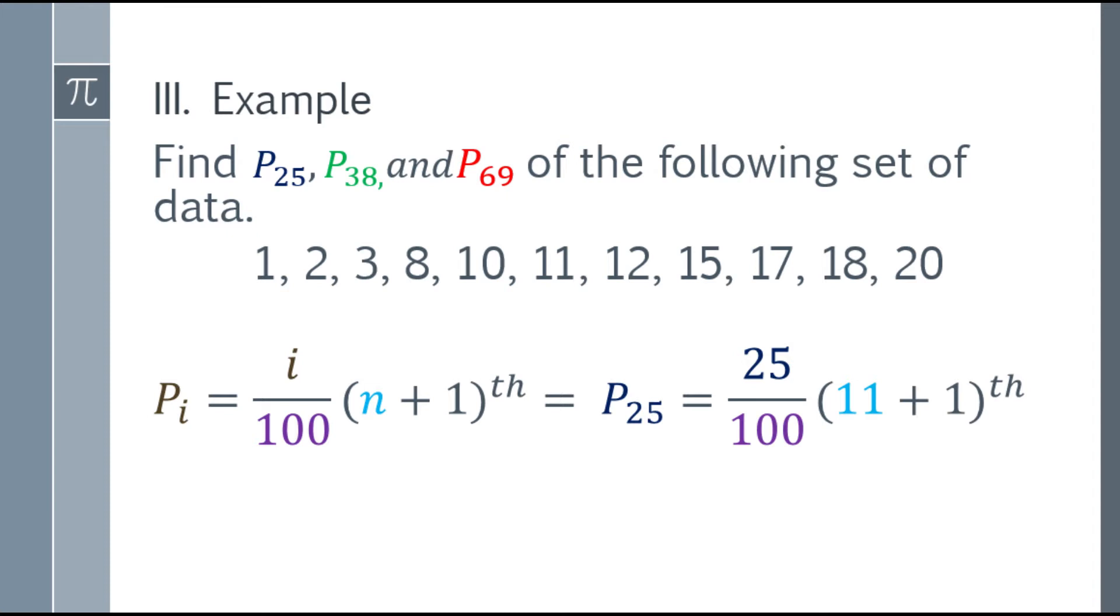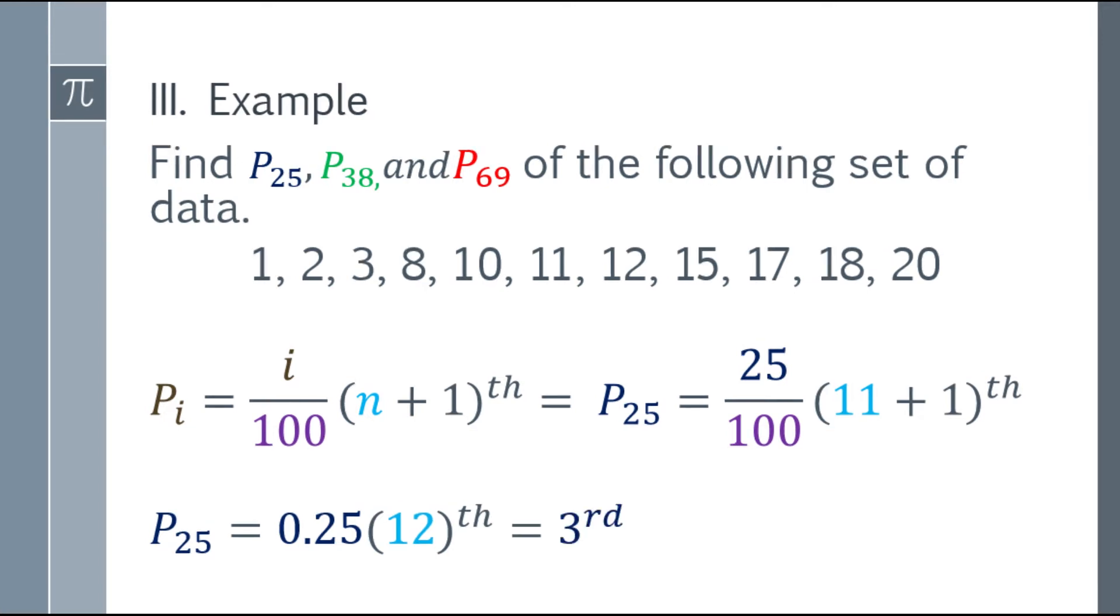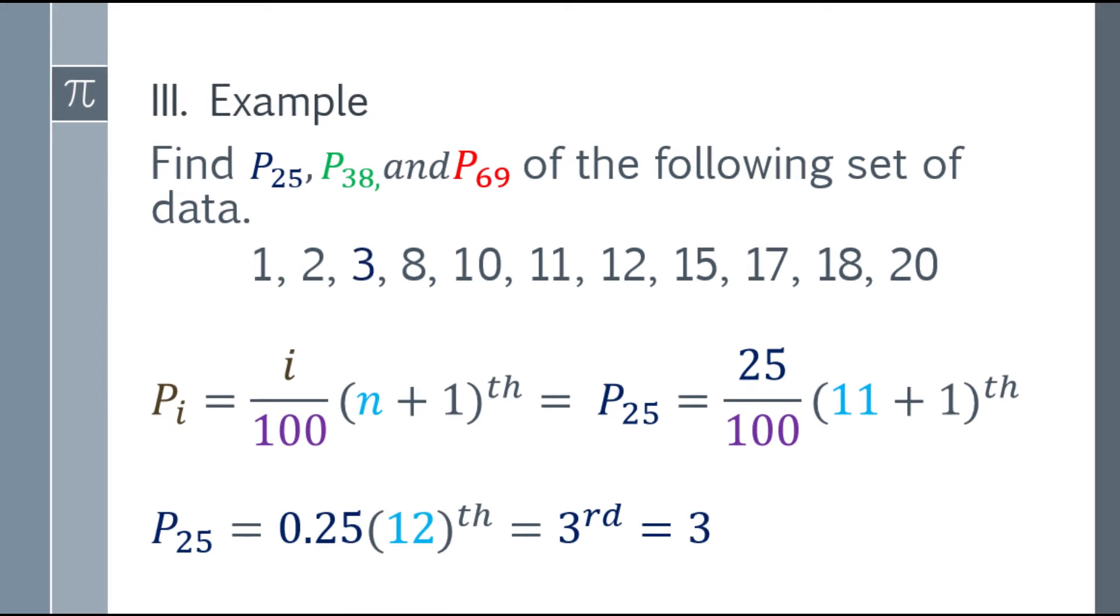That will mean 25 over 100. Multiply mo siya sa the quantity 11 plus 1. At lagay mo yung TH. Solve for it. Simplifying mo muna. 25 over 100, that will be 0.25. At yung sa loob ng parentheses, 11 plus 1, that will be 12. And the final answer will be 3. Lagay mo yung TH na 3, that will be 3rd. Hanapin natin yung 3rd number. Ang 3rd number dito ay 3. Ang P sub 25 or percentile 25 ay 3 daw dun sa data na to.